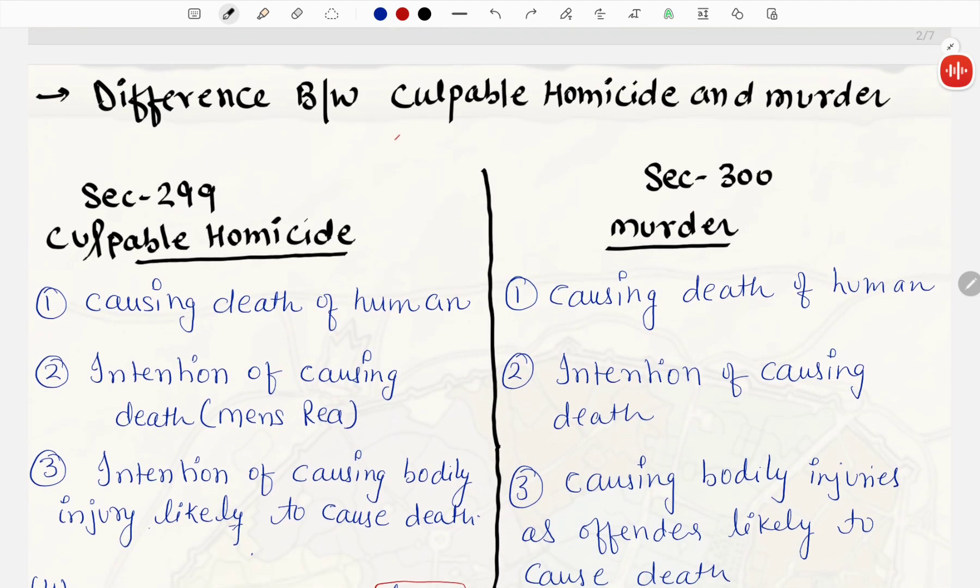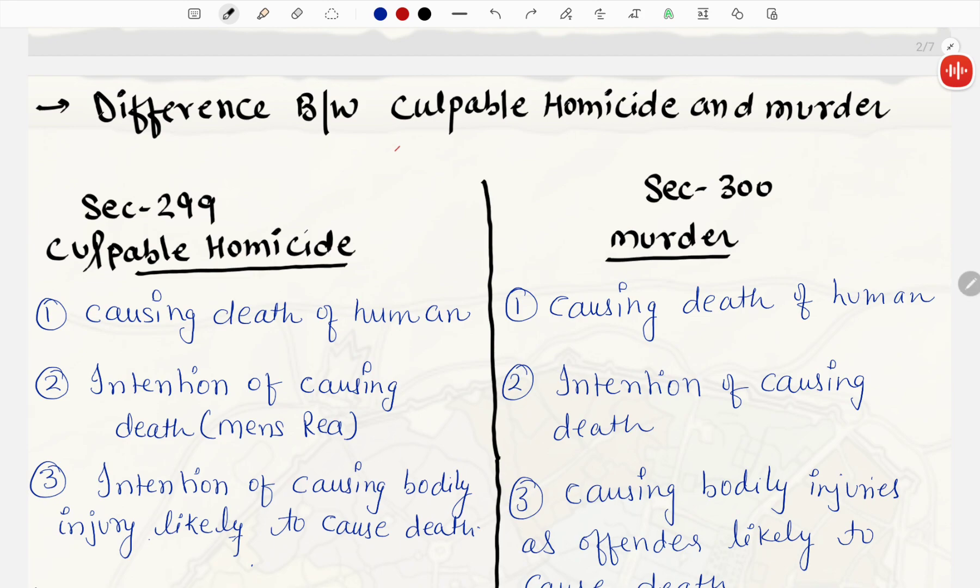Now let's understand what is the difference between Culpable Homicide and Murder. Note it down, this is not the exhaustive definition, it's just a layman definition. We are just getting to understand what is the basic difference. If we go with the definition of IPC, there is not so much difference between these two. There are so many similarities here, because these two are applicable when they come to death. When death is common, that is the unlawful death.